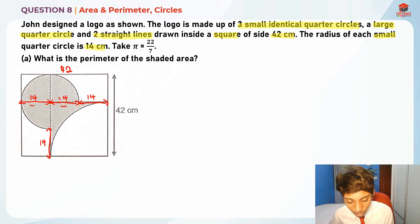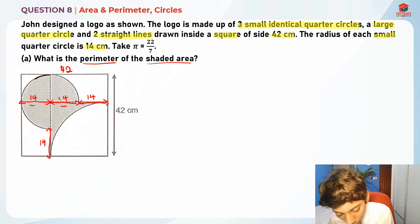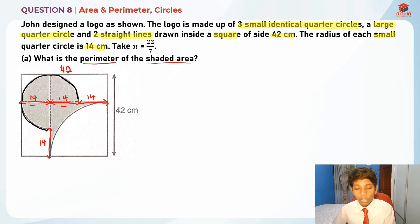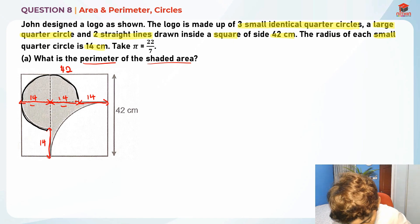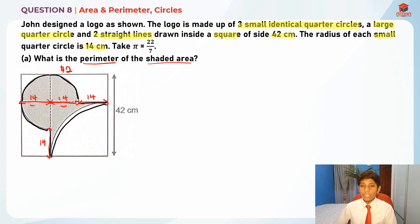So what is the perimeter of the shaded area? The perimeter they're asking us about includes: one arc, two small arcs, three small arcs — so three small arcs — and one big arc. And also two straight lines.